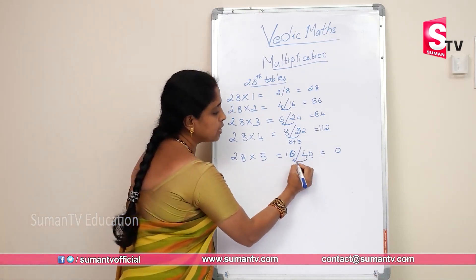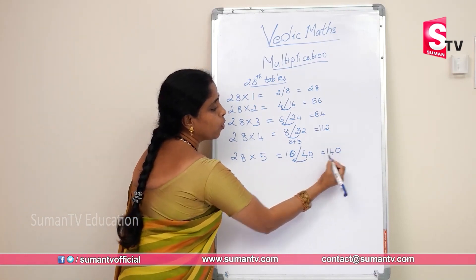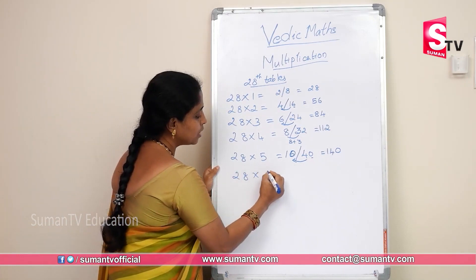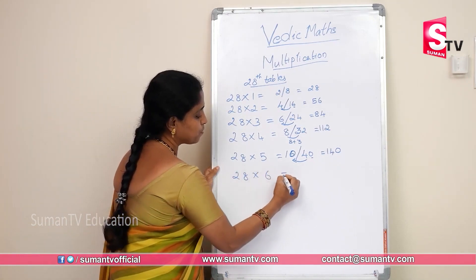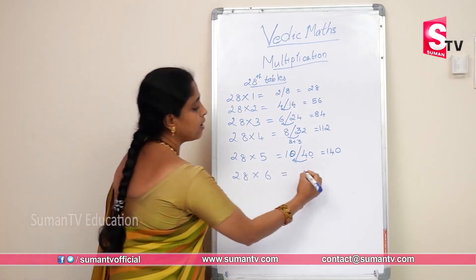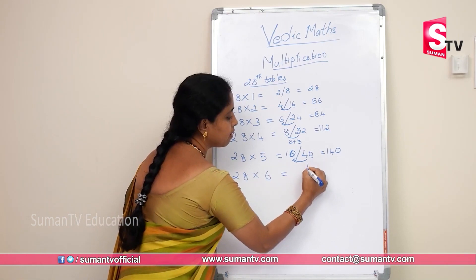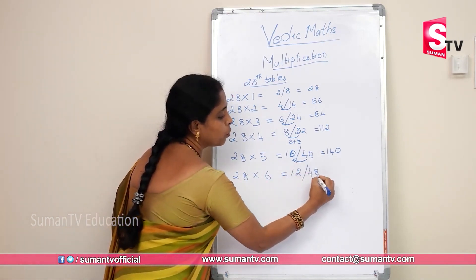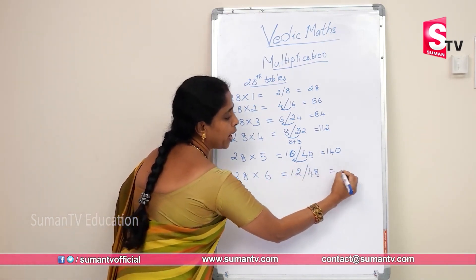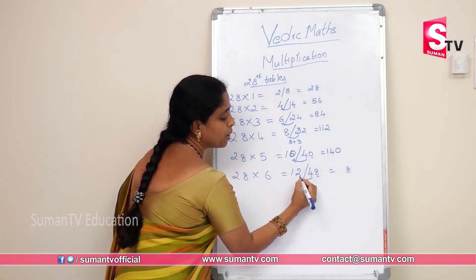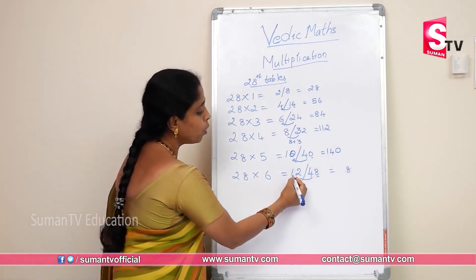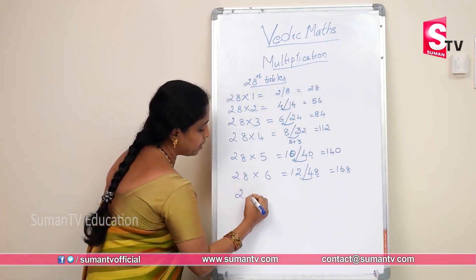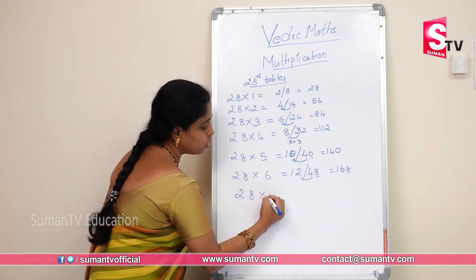28 × 6: six eights are 48, six twos are 12. Keep last digit 8, carry the 4. 4 plus 2 is 6. So 28 × 6 is 168.